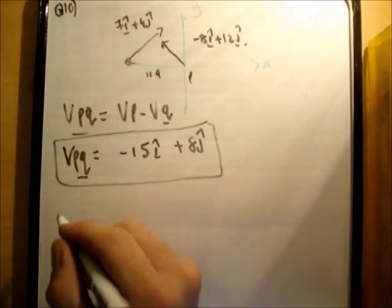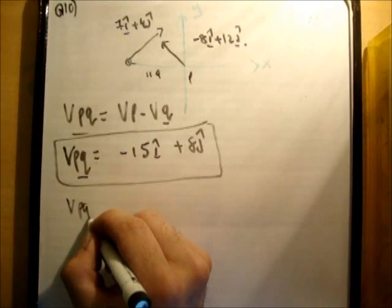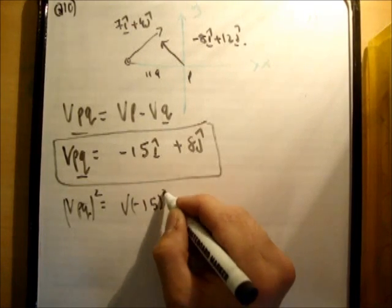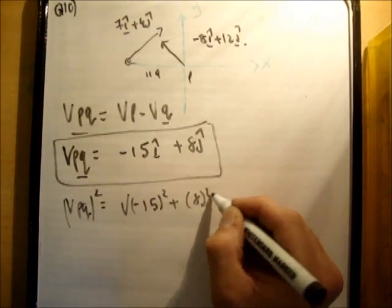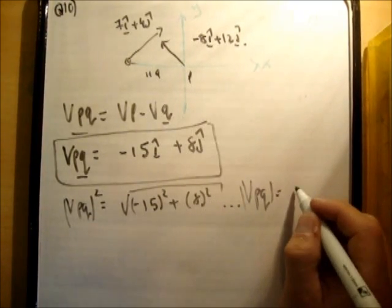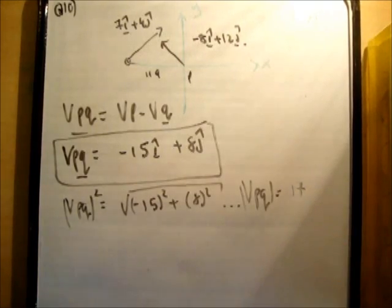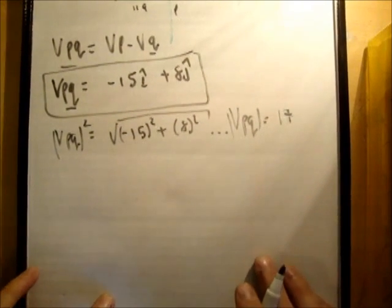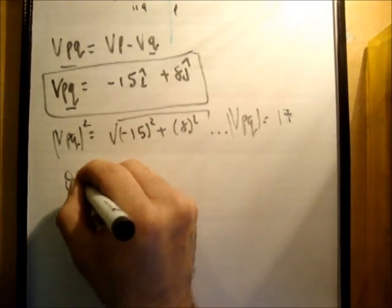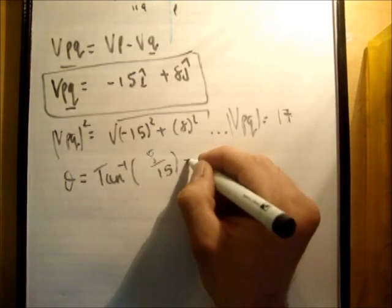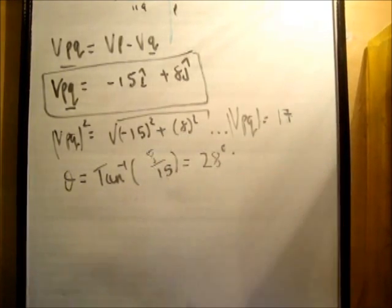To get the magnitude of it, just use Pythagoras, and you're going to get Vpq squared is equal to the square root of negative 15 squared plus 8 squared. And you'll work out that Vpq, the magnitude of it, is equal to 17. And if you want to get the angle, you'll take the inverse tan of the j over the i, so you're going to get theta is equal to inverse tan of 8 over 15 is equal to 28 degrees.